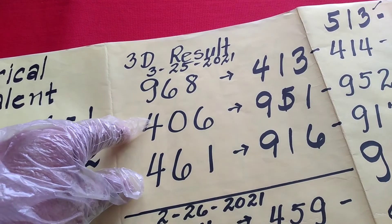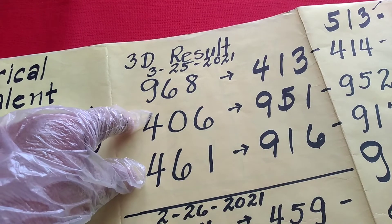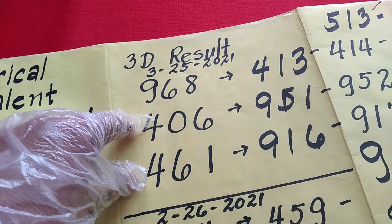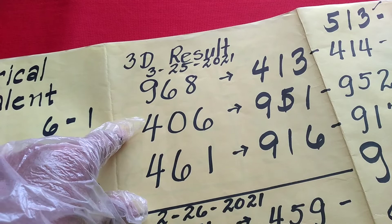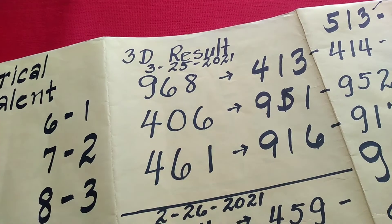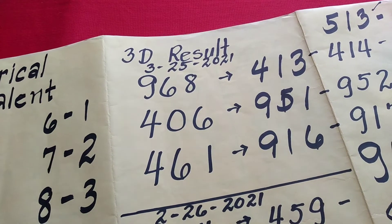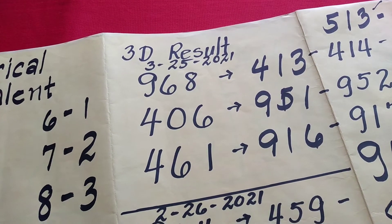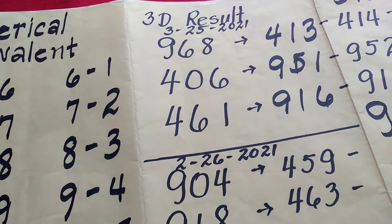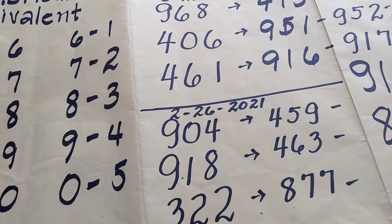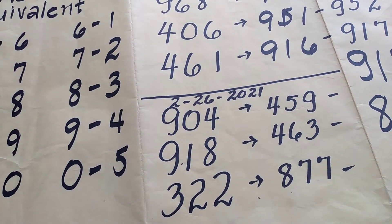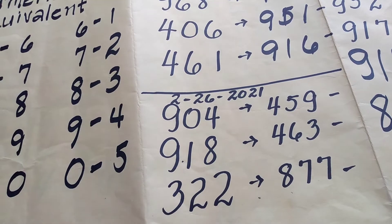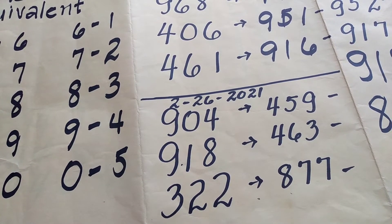Ang dalawa, ito ay kinuha sa previous result. Yung lumabas noong February 25. So ngayon naman, yung sa February 26 ay ito: 9, 0, 8, 4, 5, 9, 9, 1, 8, 4, 6, 3, 3, 2, 2, 8, 7, 7.